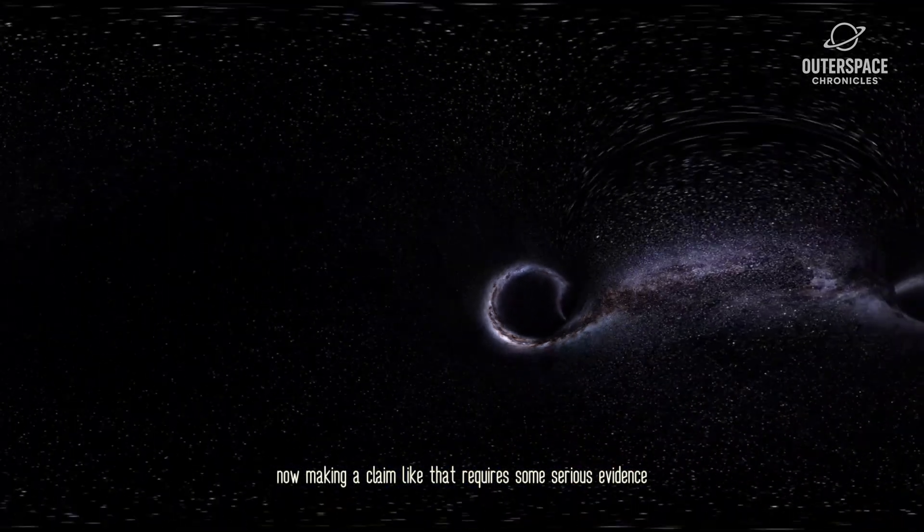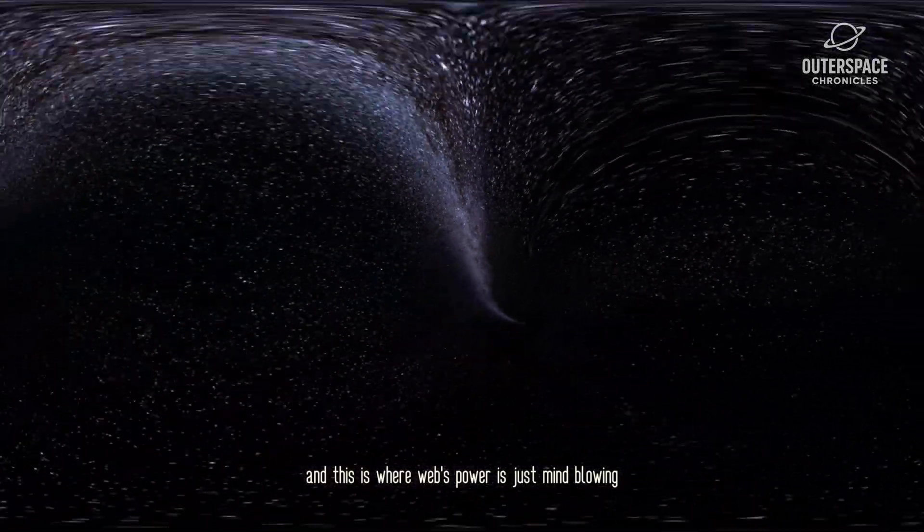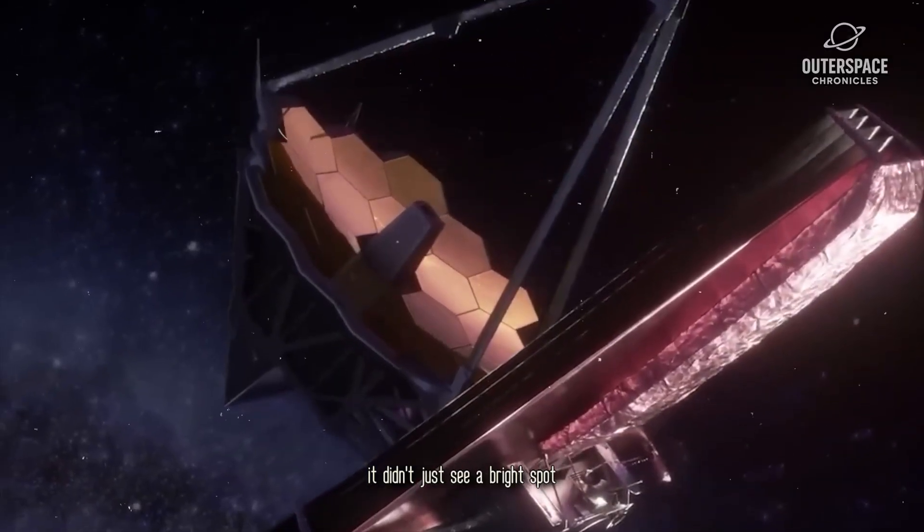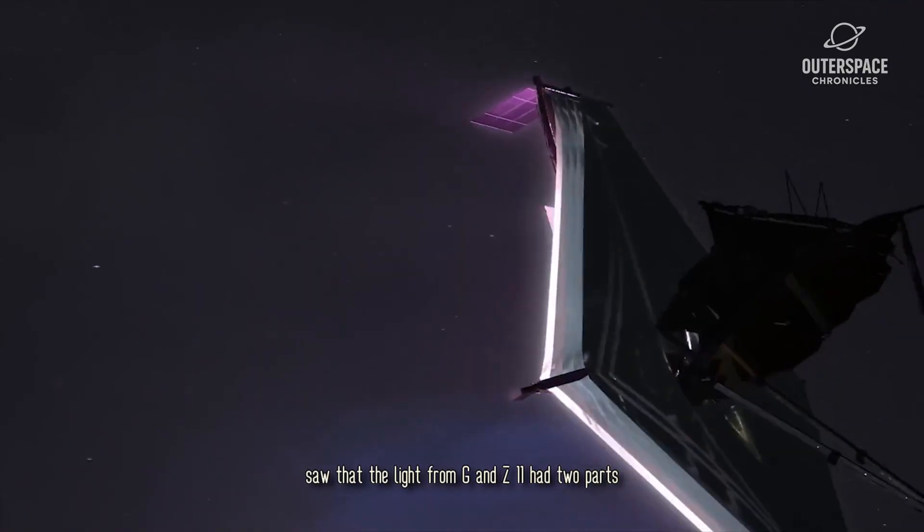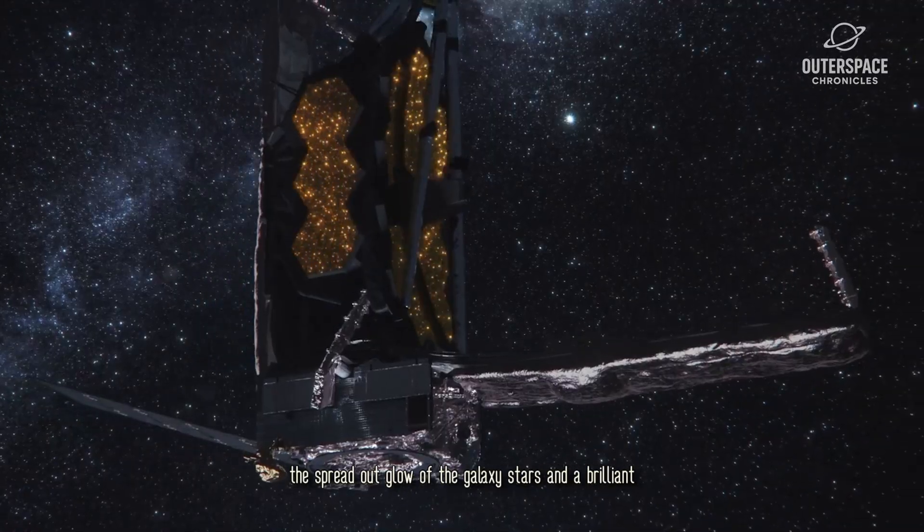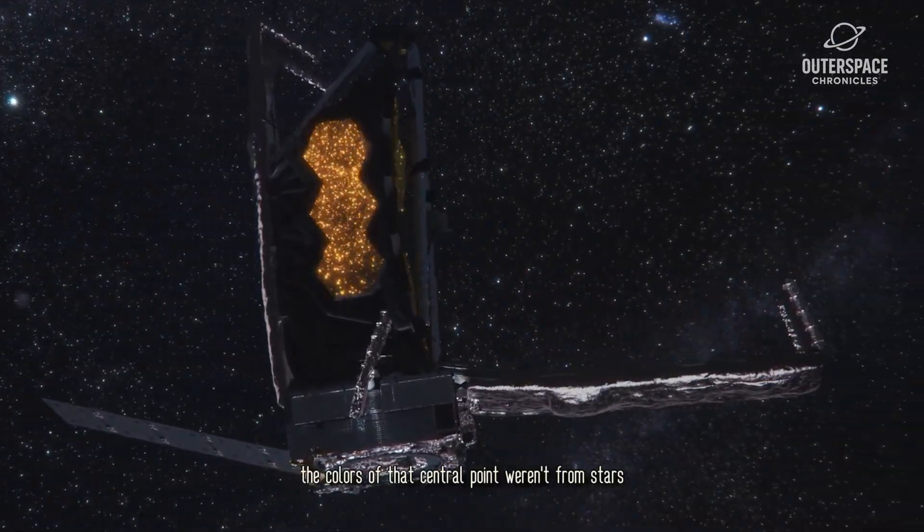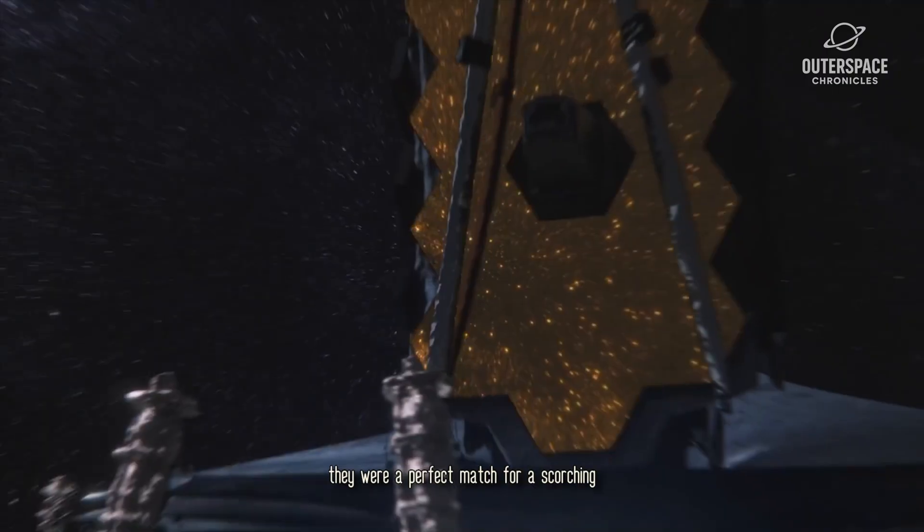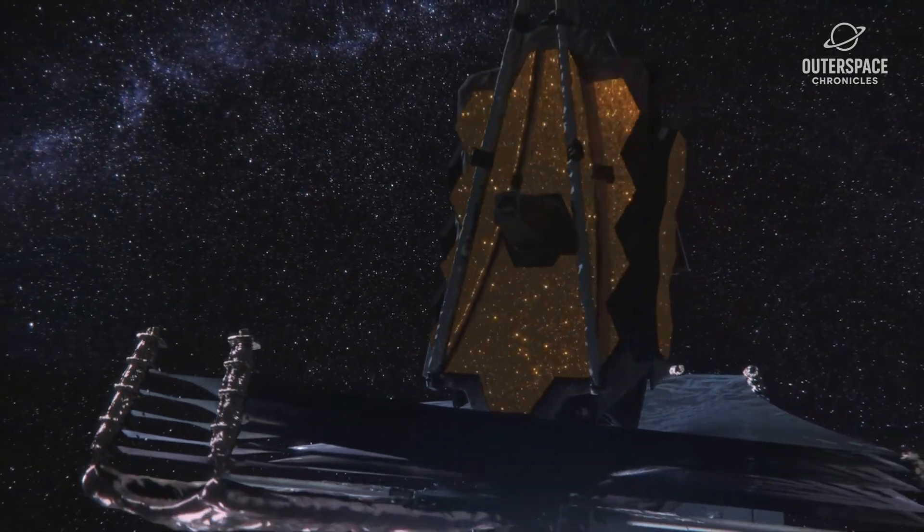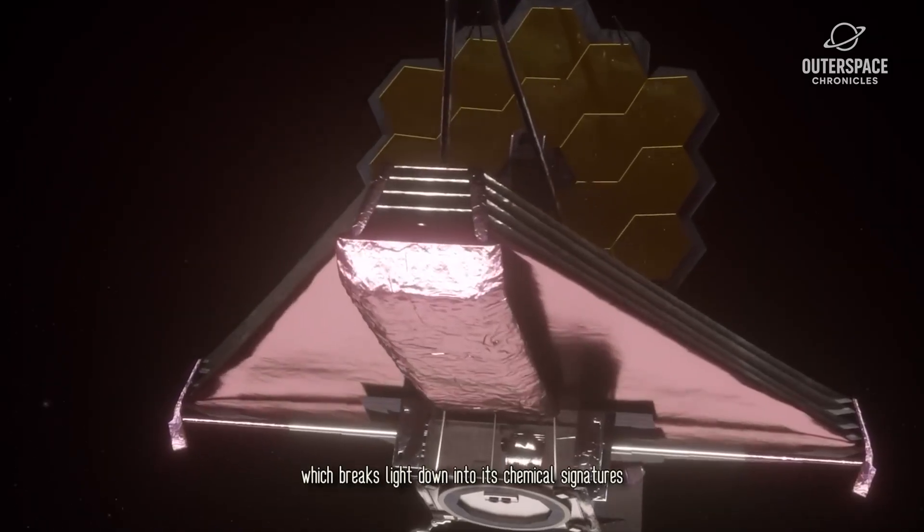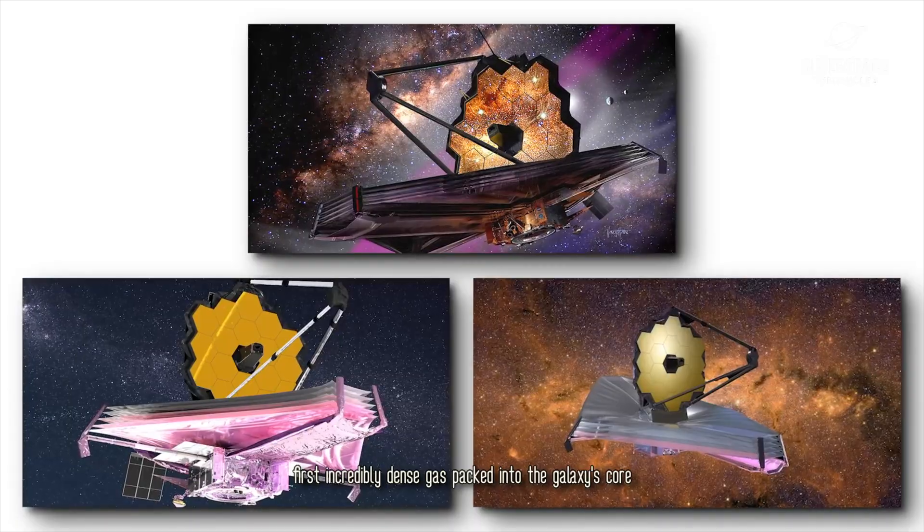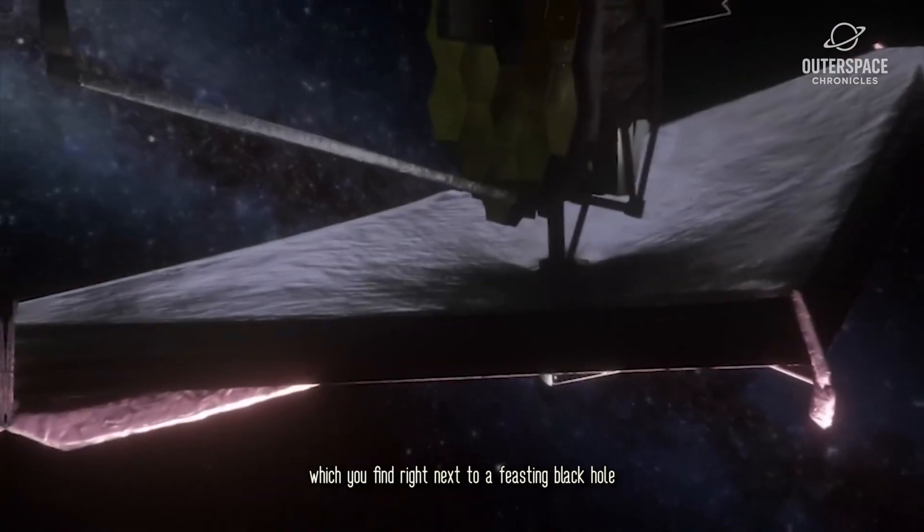Now, making a claim like that requires some serious evidence, and this is where Webb's power is just mind-blowing. It didn't just see a bright spot, it did a full forensic analysis. First, Webb's main camera, NearCam, saw that the light from GNZ 11 had two parts, the spread-out glow of the galaxy's stars and a brilliant, sharp point of light right at the center. The colors of that central point weren't from stars, they were a perfect match for a scorching hot accretion disk around a black hole. That was clue number one, but the real smoking gun came from near-spec, which breaks light down into its chemical signatures. The analysis found three key things. First, incredibly dense gas packed into the galaxy's core, which you find right next to a feasting black hole.